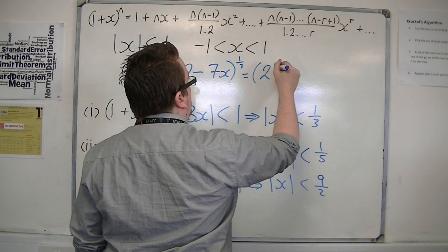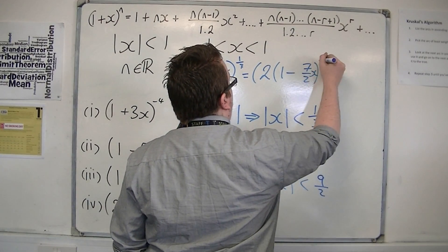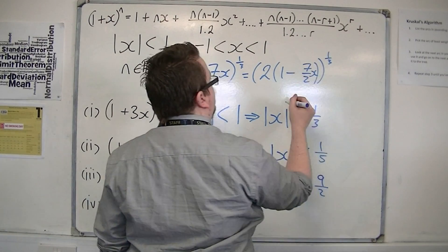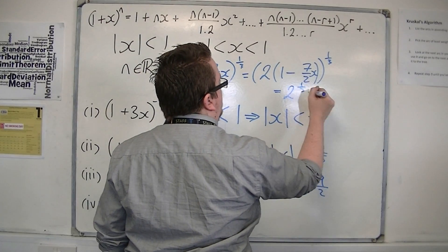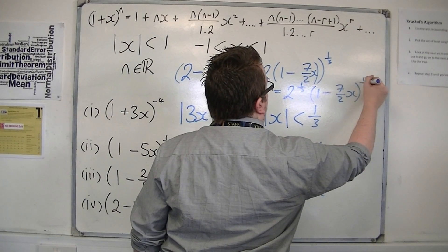I've got 2 lots of 1 minus 7 halves x to the power of 1 third. Which is 2 to the power of 1 third times 1 minus 7 halves x to the power of 1 third.